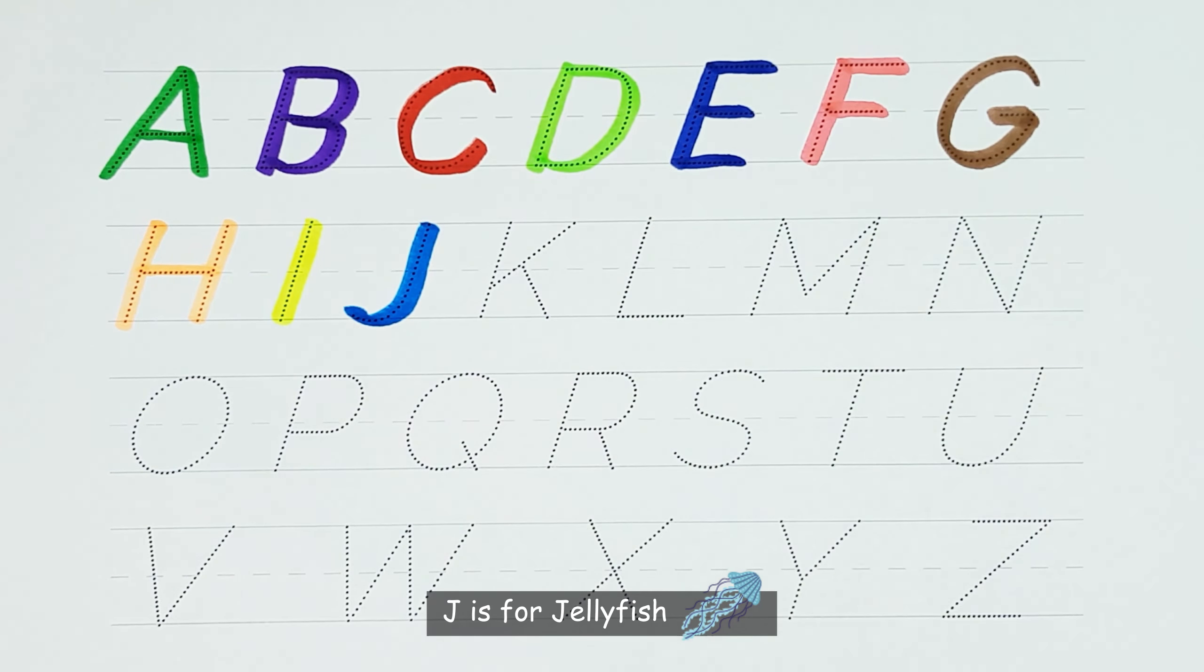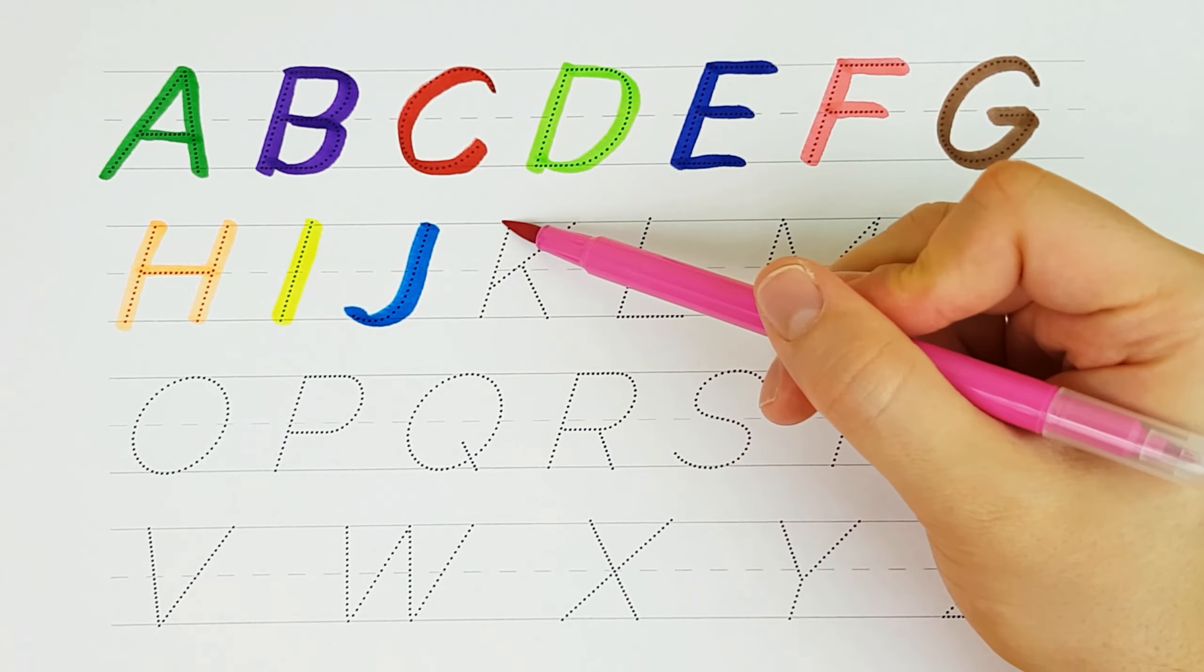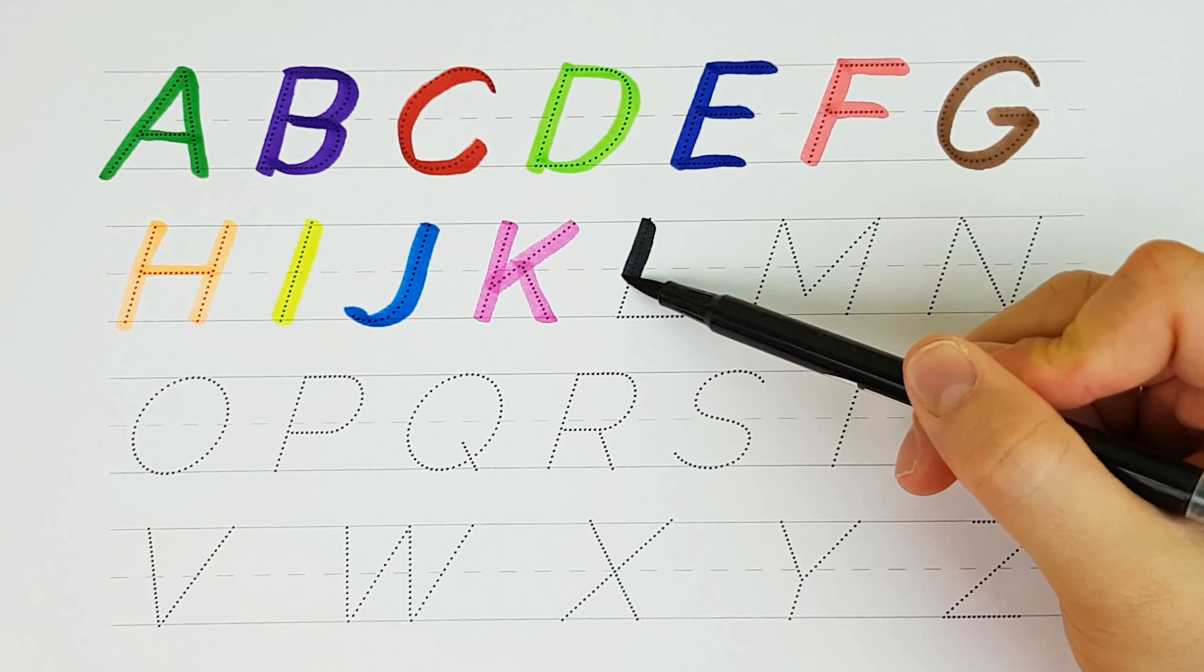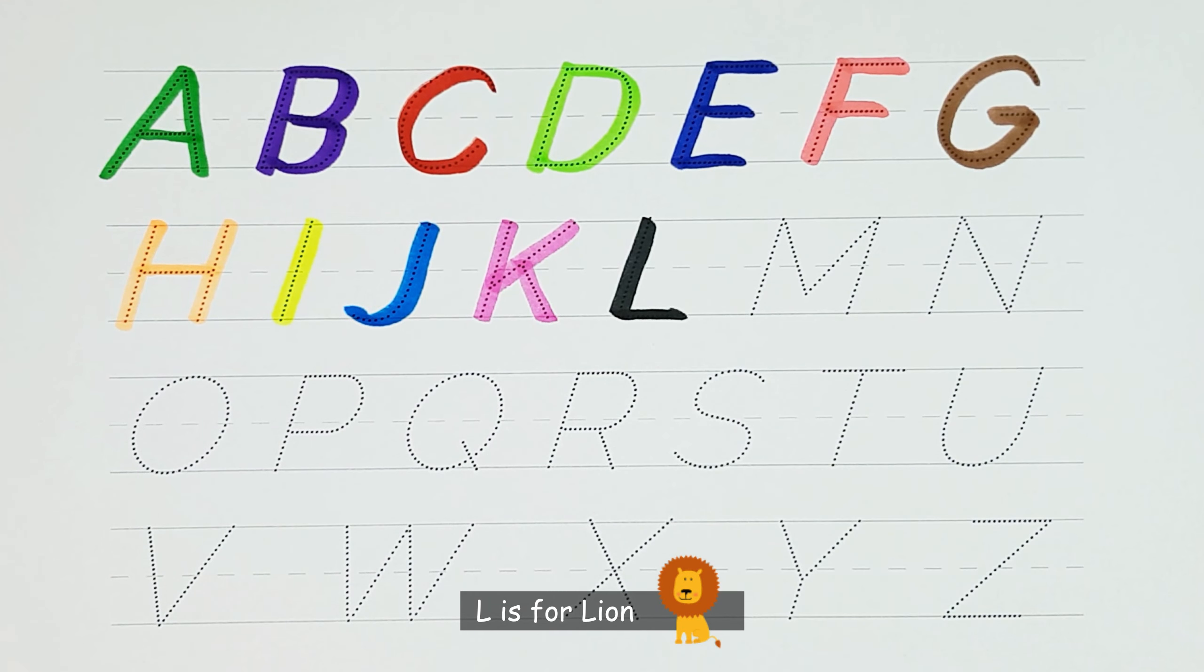J. J is for Jellyfish. K. K is for Koala. L. L is for Lion.